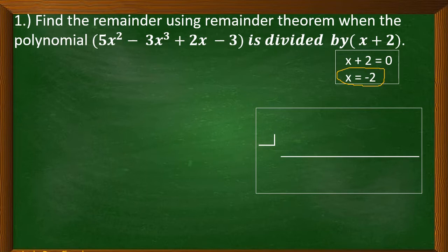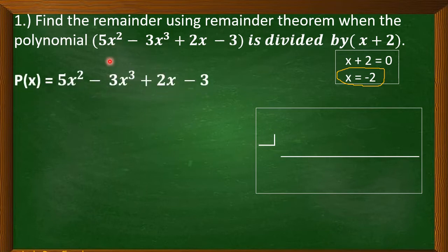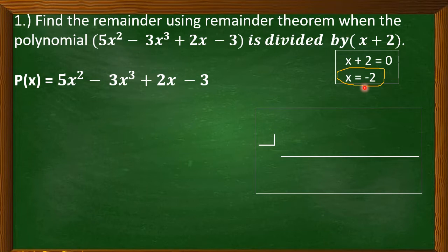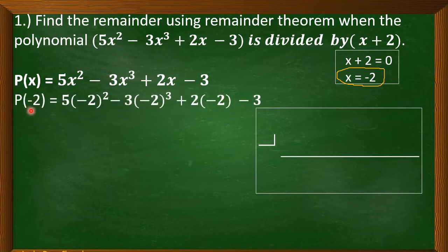Now we are going to write our p of x: 5x squared minus 3x cubed plus 2x minus 3. Since our x is equal to negative 2, we are going to solve for p of negative 2.